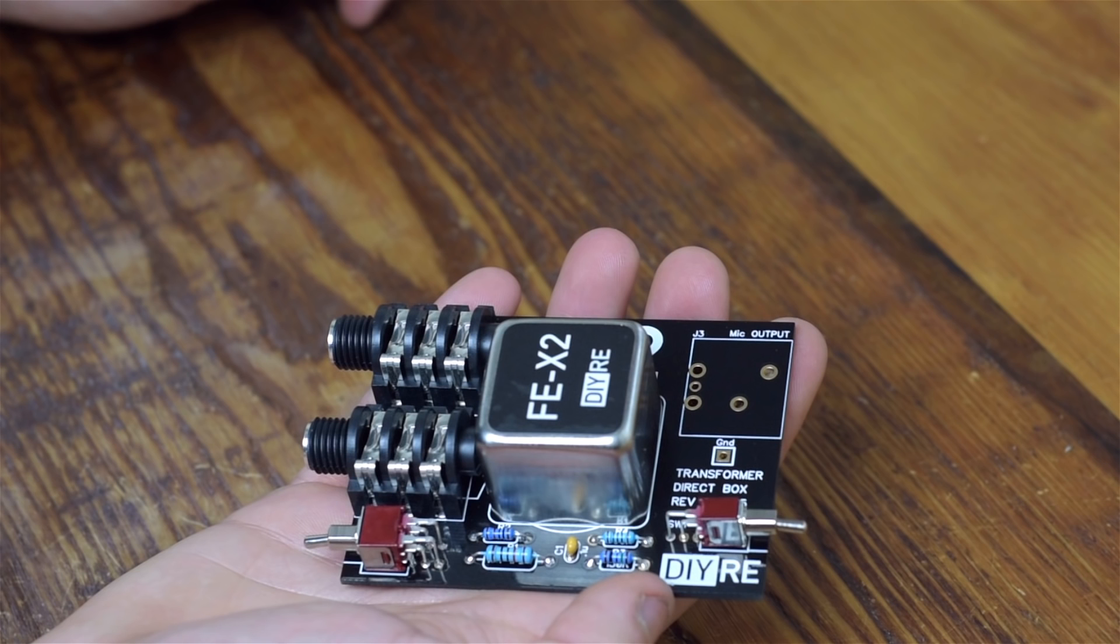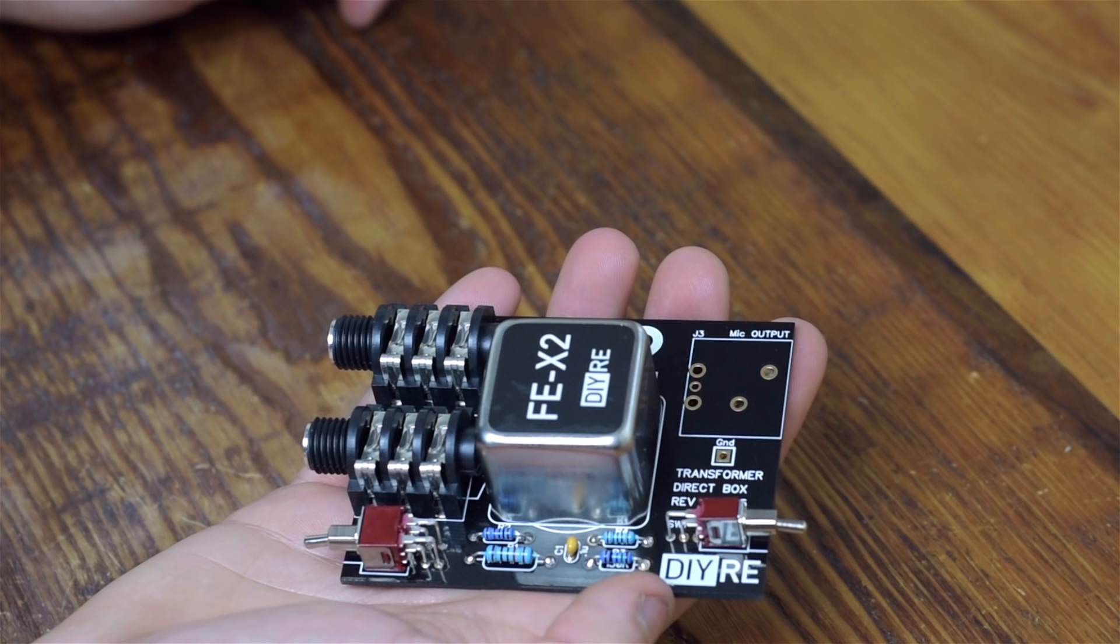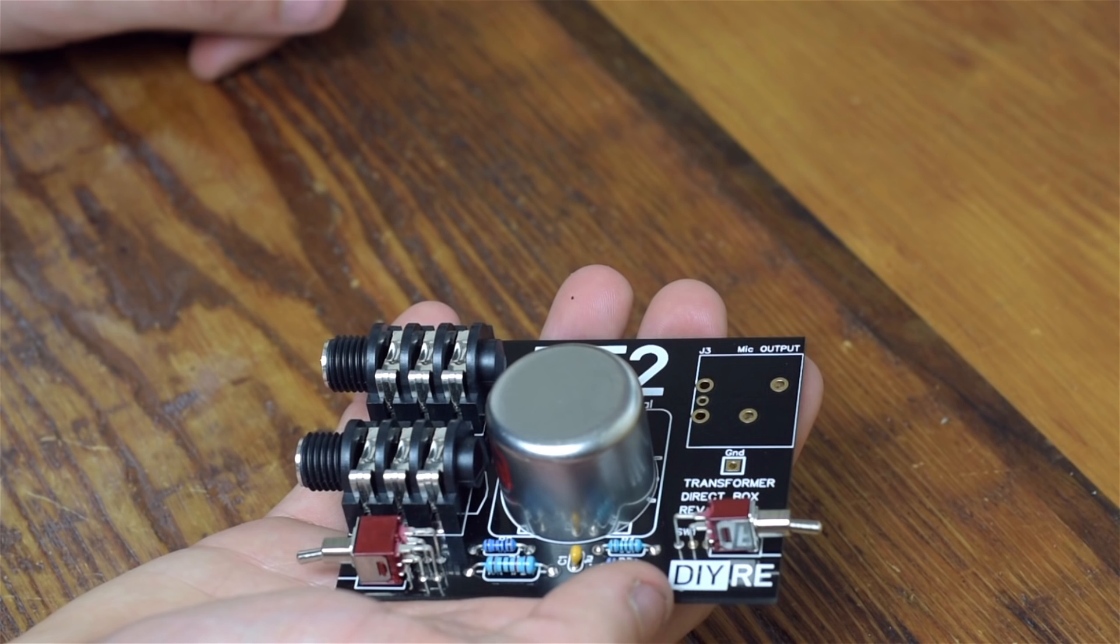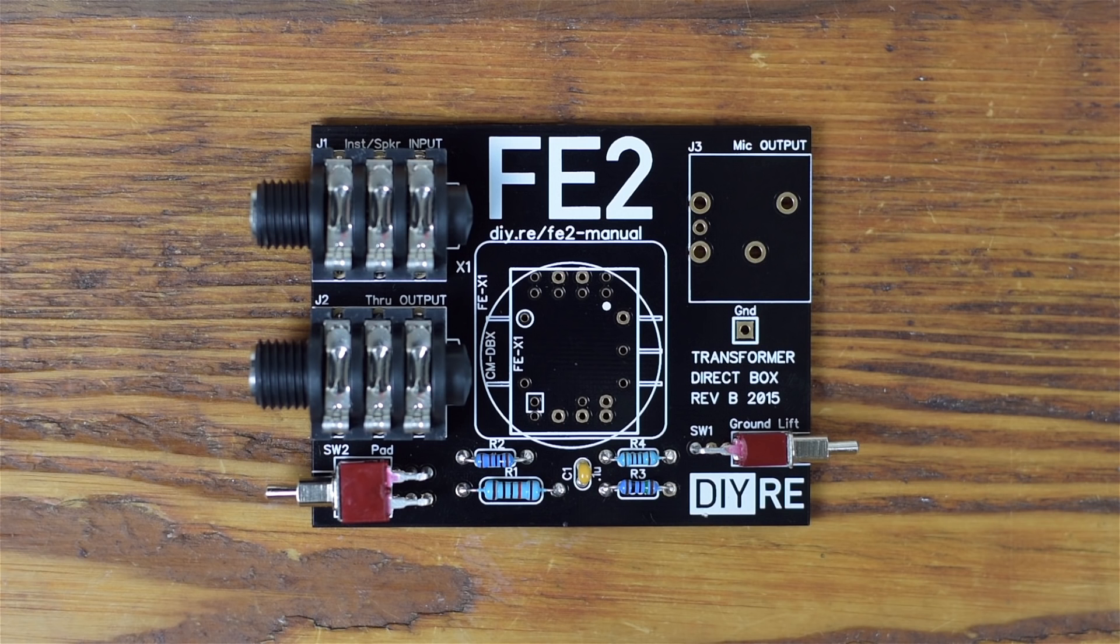There are three transformer options for the FE2. The FEX1, the FEX2, and Cinemag's CMDBX. Each transformer has its own footprint on the board.